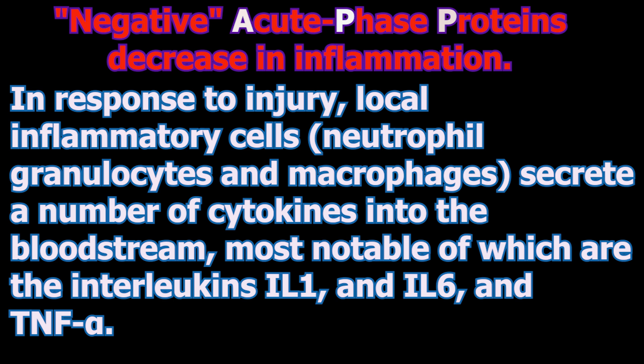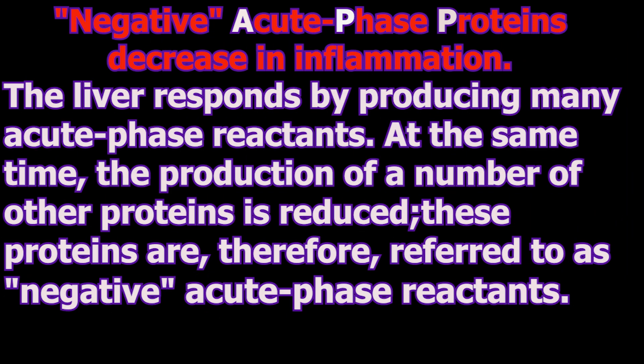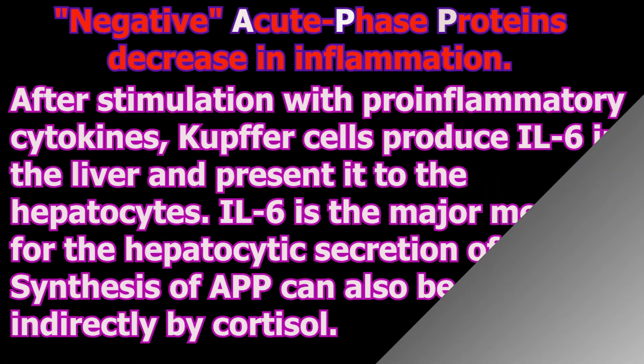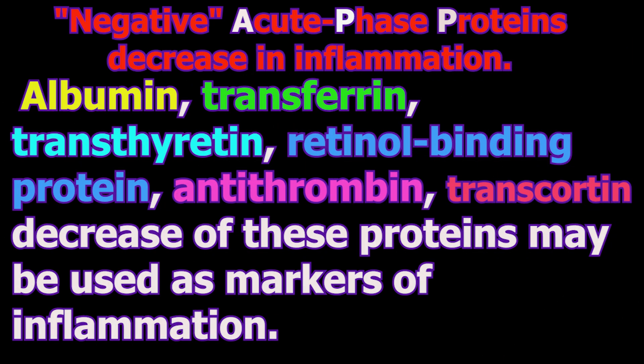Ferritin and pro-coagulant proteins may limit infection by trapping pathogens in local blood clots. Negative acute phase proteins, such as albumin and transferrin, decrease in inflammation. These decreased levels can also be used for diagnosis — the reduction helps redirect resources to produce positive acute phase proteins and limits nutrient availability to pathogens for their growth.